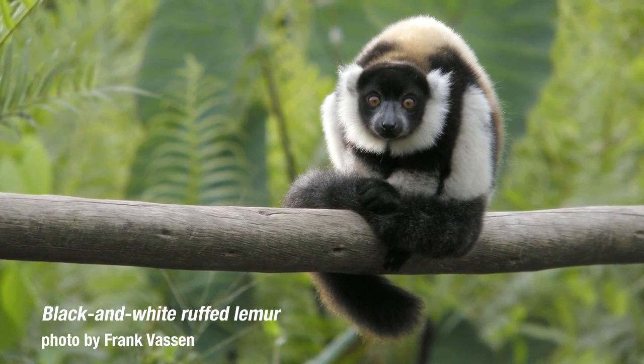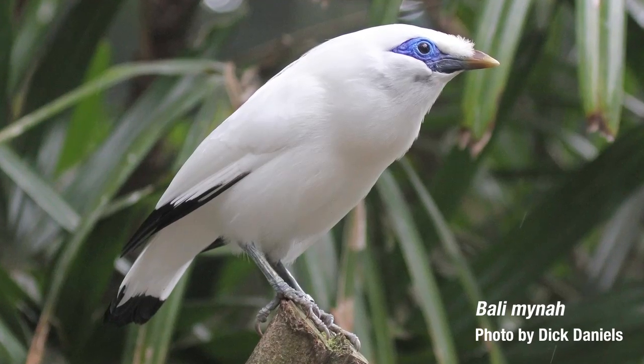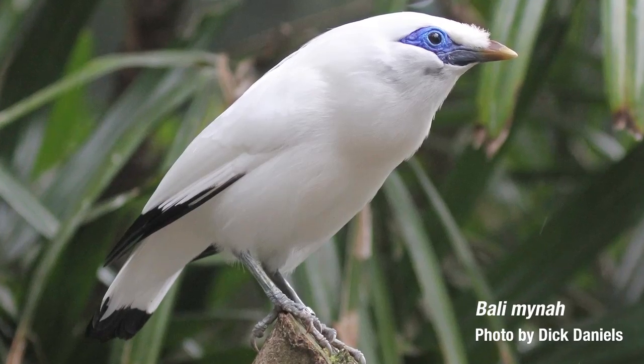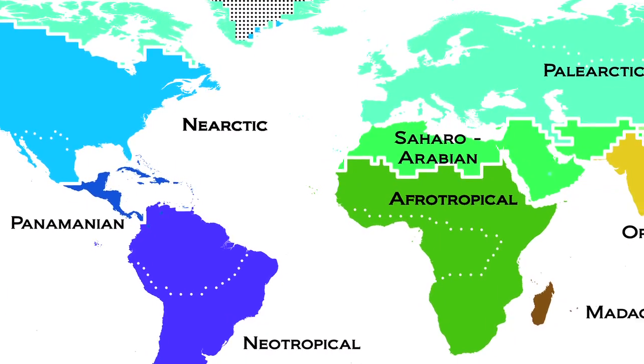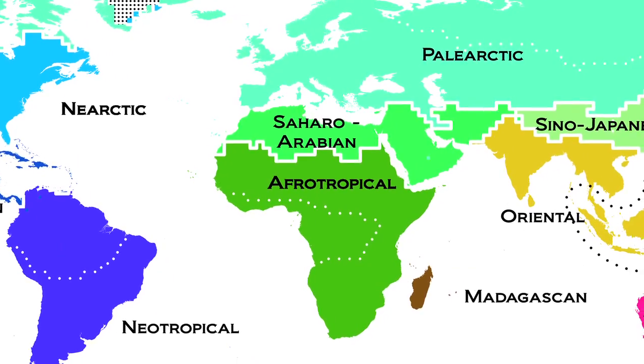A lot of biodiversity science aims to understand why there are a lot of species in some places and less in others. For decades we've mainly focused on the importance of what we call ecological processes — things that are happening now, like current climate. But what we've only started to realize more recently is that evolution also plays an important role, and the history of our planet has a huge impact on how biodiversity looks today. Our map was a first step in this direction of understanding the role of evolution and history in shaping biological diversity.